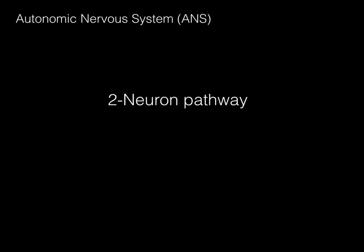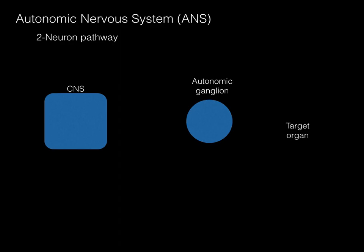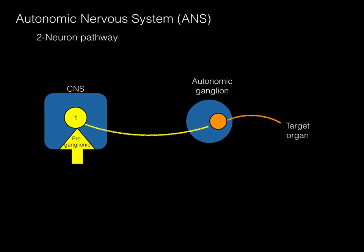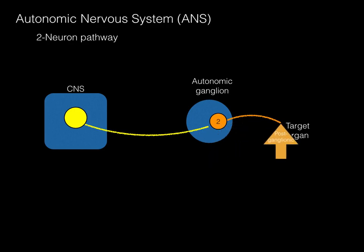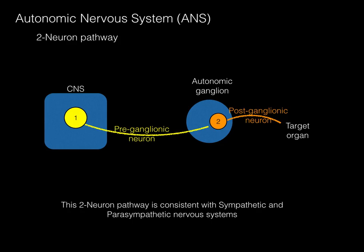Let's talk about the two-neuron pathway pattern in the ANS. The two-neuron pathway has a central nervous system origin, then innervation or synapse in a peripheral autonomic ganglion, and then a target organ. The first neuron represents the cell body of a preganglionic neuron, which sends its axon to synapse in a peripheral ganglion. There the second neuron's cell body is located, and its axon goes out to the target organ. We call this the preganglionic neuron because it's before the peripheral autonomic ganglion, and the postganglionic neuron because it's after. This two-neuron pathway is consistent with both sympathetic and parasympathetic nervous systems.